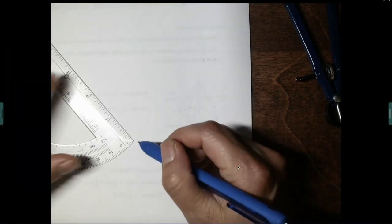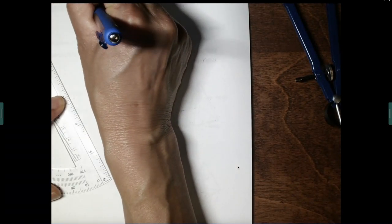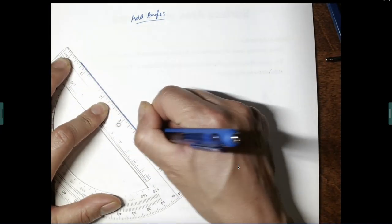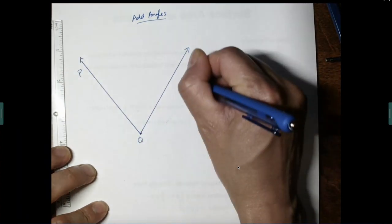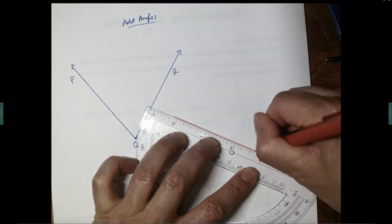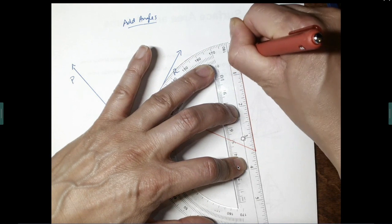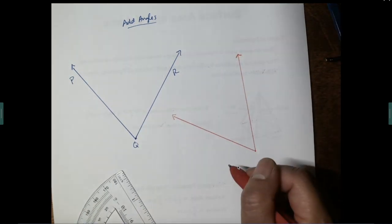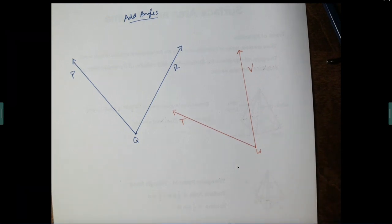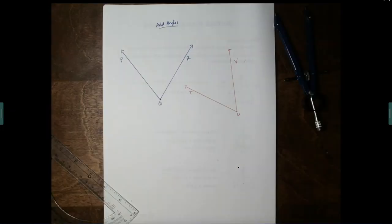In our last construction, you're going to be given two or more angles and asked to add them. Think of the angle addition postulate. We don't technically add angles because they are shapes, but through the magic of geometric constructions we are going to sort of add angles. Let's give ourselves two angles — let's call one angle PQR and give ourselves another angle over here.